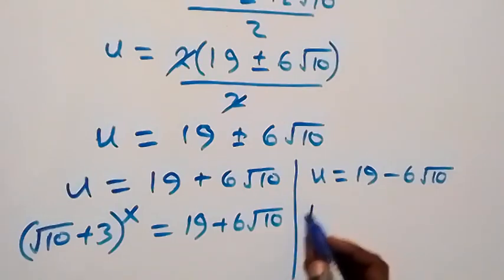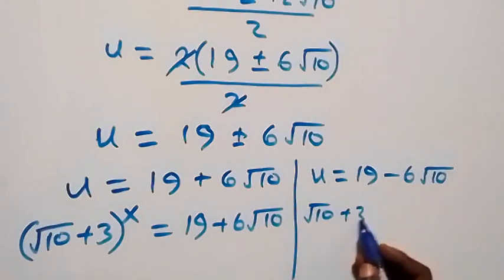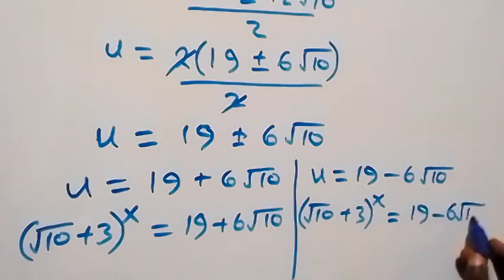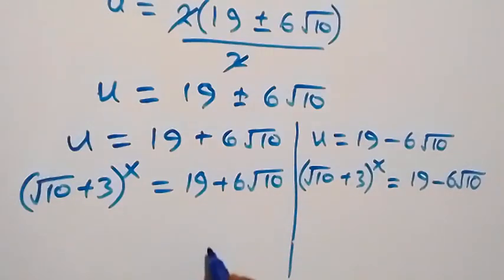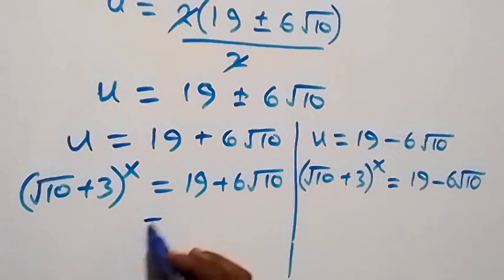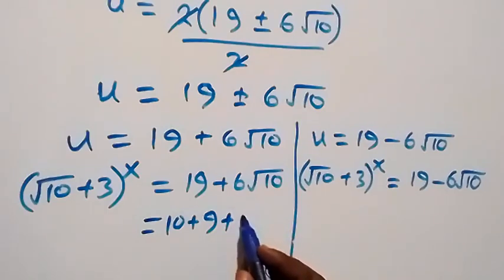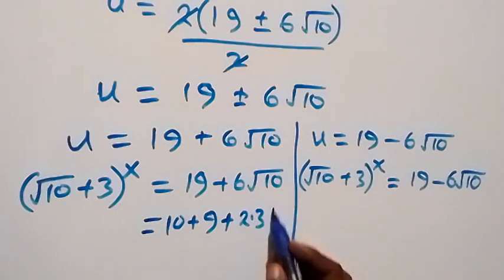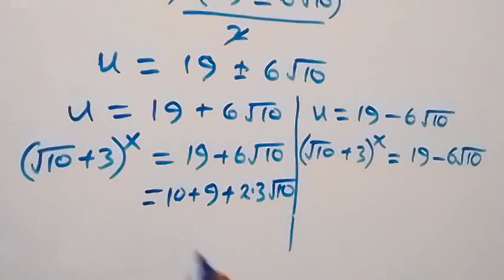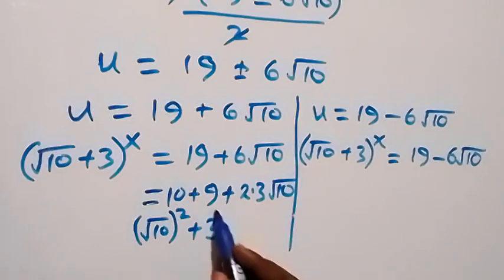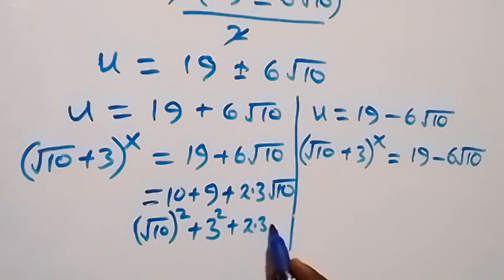And also on this side, (root 10 plus 3) raised to power x equals 19 minus 6 root 10. Now what we have here — we can rewrite it: 19 can be written as 10 plus 9, then plus 6 written as 2 times 3, times root 10. And 10 here can be written as (root 10) squared, then 9 can be written as 3 squared, then plus 2 times 3 times root 10.